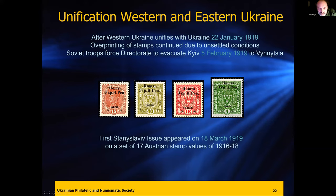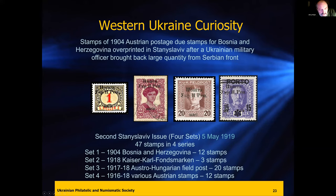There are many stamps overprinted on Austrian stamps. This is the first Stanislaw issue — another main city in Ukraine, known today as Ivano-Frankivsk — with 17 stamps overprinted beginning in March. They kept overprinting because they didn't have stamps they'd printed themselves, same as in central Ukraine in Kyiv. This is the second Stanislaw issue; there were four sets in total, including Bosnia-Herzegovina field post stamps and the Kaiser stamps — young and old.